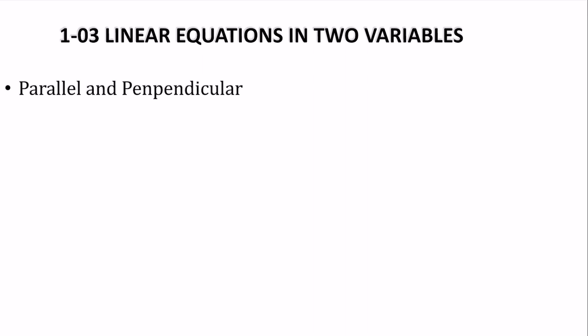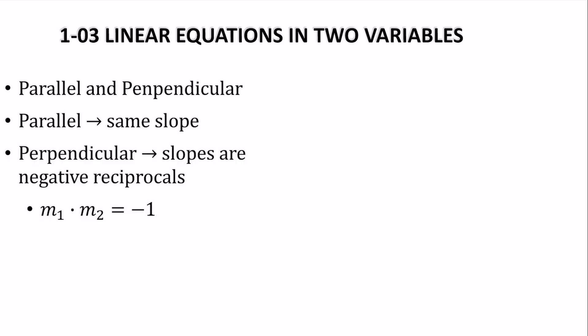Some pairs of lines are parallel, and some are perpendicular. Parallel lines have the same slope. The perpendicular slopes are negative reciprocals, like 1/2 and negative 2, or 3/2 and negative 2/3. When you multiply them together, if they're perpendicular, the slopes multiply to make negative 1.